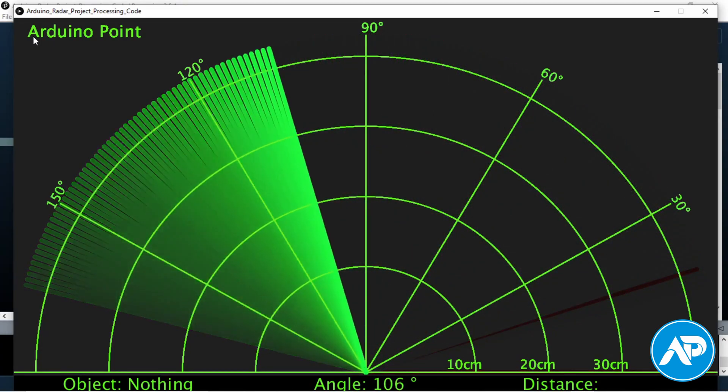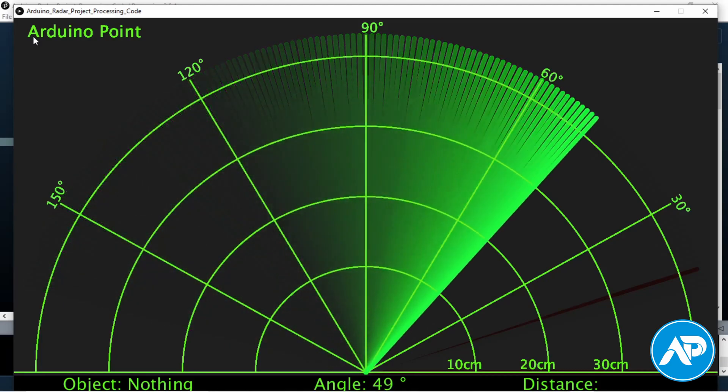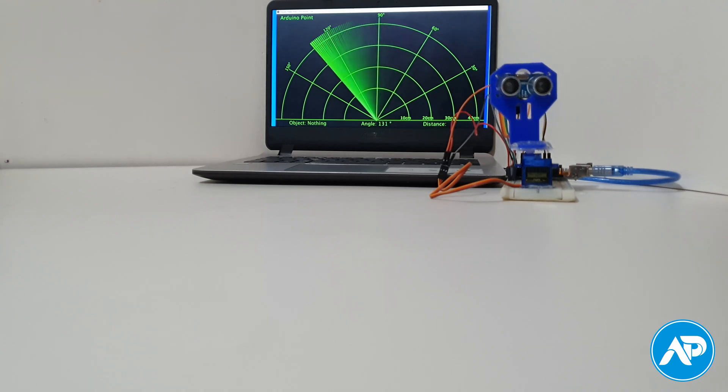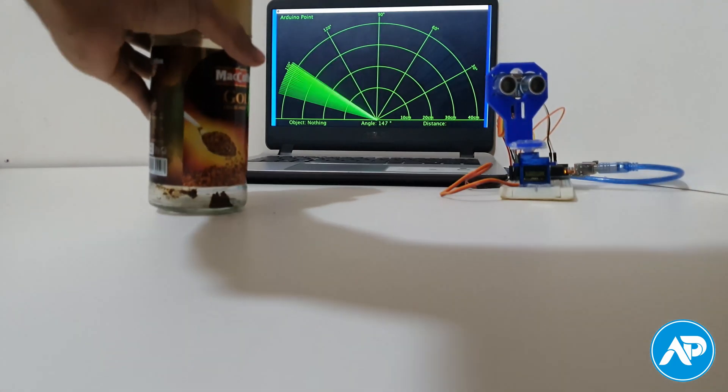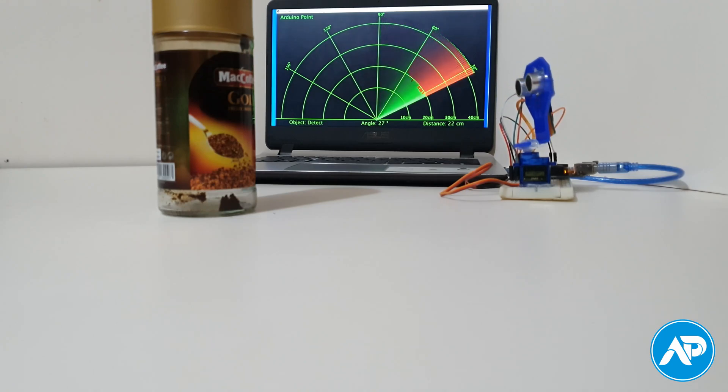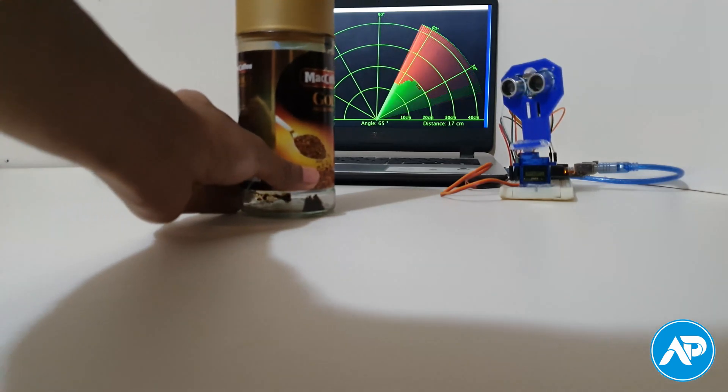Let's see how this Arduino radar performs. When there is no object in the radar range, it shows nothing. When any object comes into the radar range, it shows object detected and displays the distance and angle.